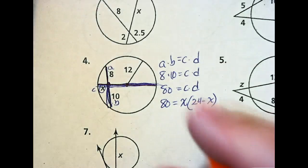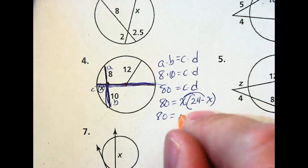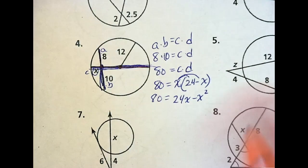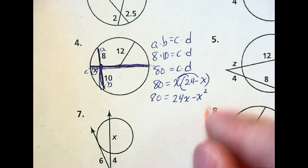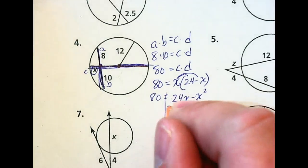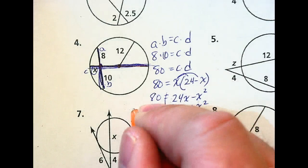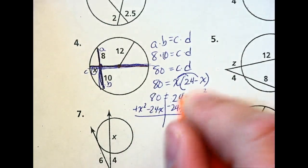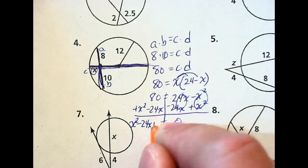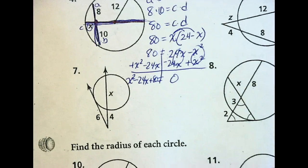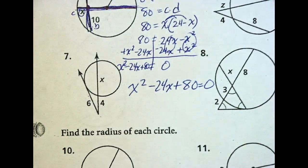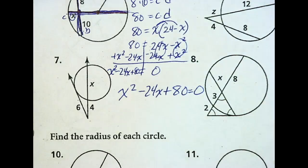So 80 equals x times (24 minus x) — distributing gives us 24x minus x squared. That's a quadratic, so set it equal to zero. To keep the a term positive, add x squared and subtract 24x to move everything over. We end up with x squared minus 24x plus 80 equals zero. Now we have to solve that using factoring if possible, or the quadratic formula.